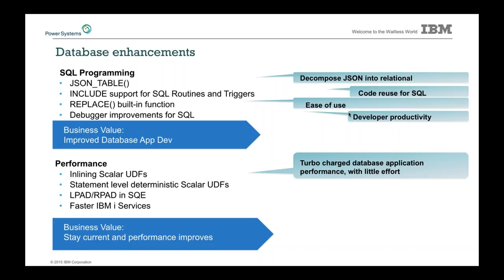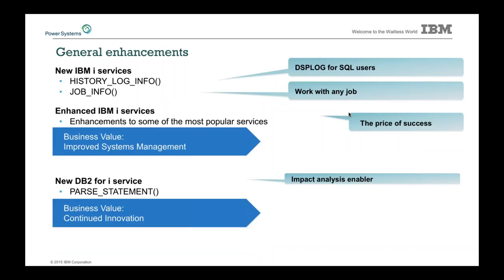If you have embedded SQL in your RPG, the debugger will handle that much better now. There are also bunch of performance updates continuously being made to improve query and database information access. We continue to focus on IBM i Services — we have two brand new services in this release: history log info and job info. These are great new services to let you get at job information or history information, and then leverage SQL to sort, filter, and find what you're looking for.